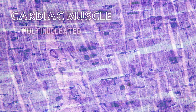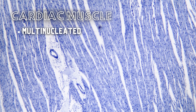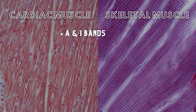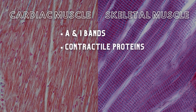These cells are multinucleated and have less connective tissue between cardiac muscle cells compared to skeletal muscle. Cardiac and skeletal muscles do have a few things in common, including both types having the same A-bands and I-bands, and the same contractile proteins.